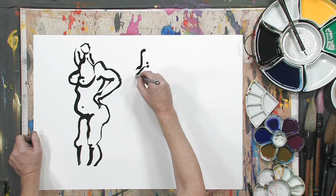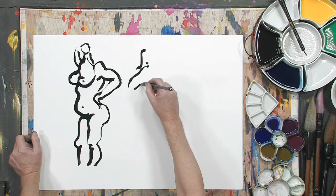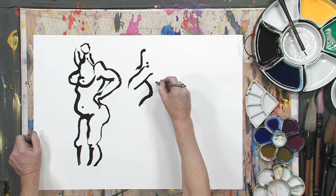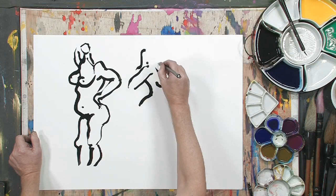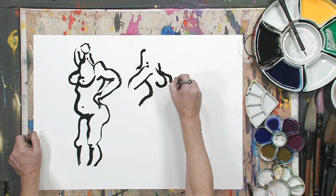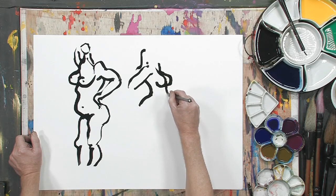Again, each stroke is an observation. The idea is really to fuse your move with what you see. It's a fusion.